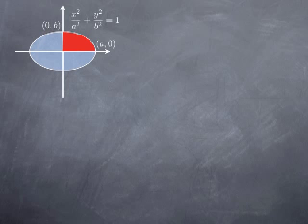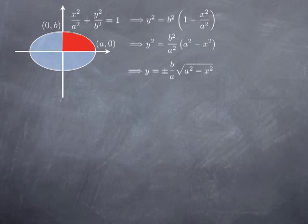To find what function we need, we solve for y in the equation of the ellipse. Subtracting x²/a² from both sides and multiplying by b², we get b² times (1 minus x²/a²). Writing the parenthesis as one fraction gives (a² minus x²)/a². Pulling out 1/a², we obtain b²/a² times (a² minus x²). So y is plus or minus b over a times the square root of a² minus x², where the plus version gives the upper half and minus the lower half of the ellipse.